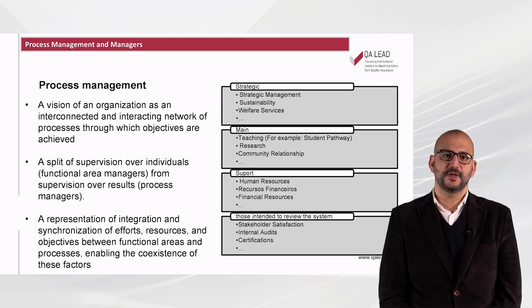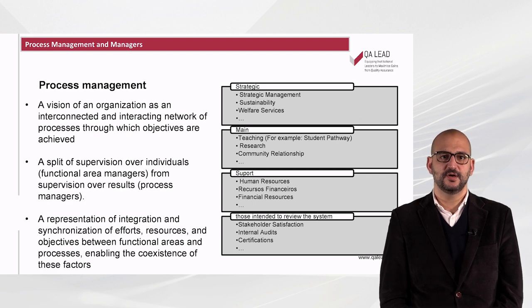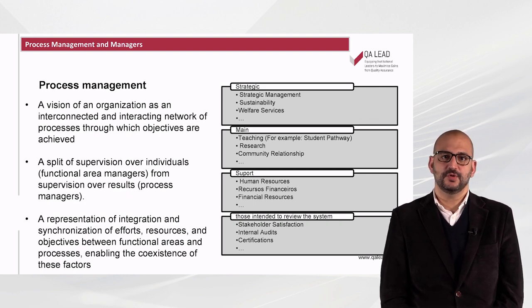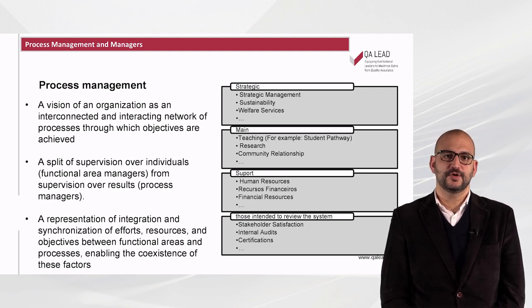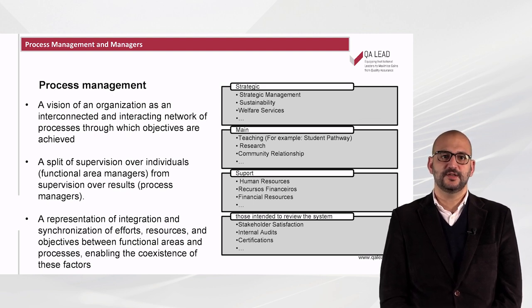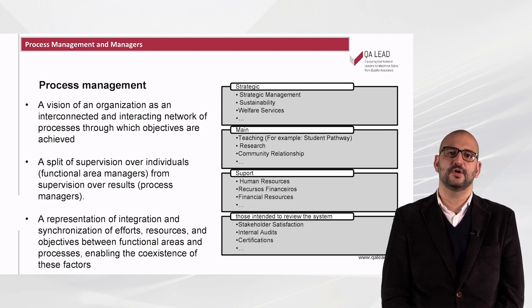What is the meaning of the process management? Process management presumes a vision of an organization as an interconnected and interacting network of processes through which objectives are achieved. A split of supervision over individuals, function, and functional area managers from supervision over results — process managers. A representation of integration and synchronization of efforts, resources, and objectives between functional areas and processes, enabling the coexistence of these factors.